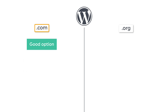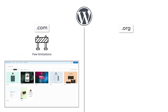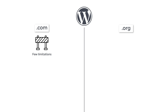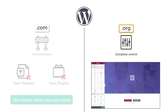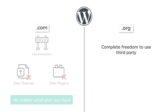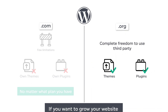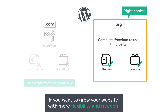WordPress.com is a good option for beginners and bloggers, but it has a few limitations. You'll be able to do only limited customizations, and there are only a few free themes which you can use. Also, you cannot upload your own themes or plugins, no matter what plan you have. On the other hand, WordPress.org gives you complete control over your website and lets you customize it the way you want. There are thousands of free WordPress themes you can use, and you have complete freedom to use third-party themes and plugins. So if you want to grow your website with more flexibility and freedom, WordPress.org is the right choice.